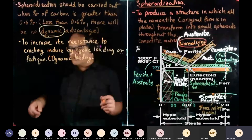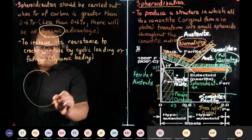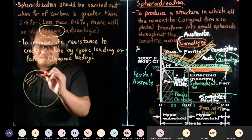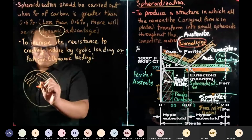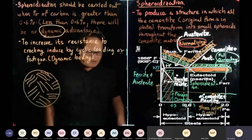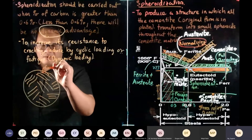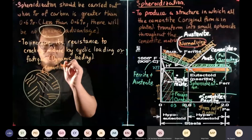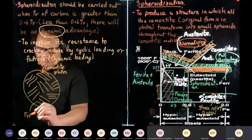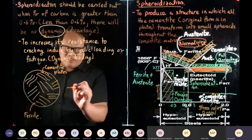I'm going to sketch the microstructure — specifically the cementite region. We have cementite plates running this way, and the dark region is our ferrite. After we bring it through spheroidization, the microstructure changes.